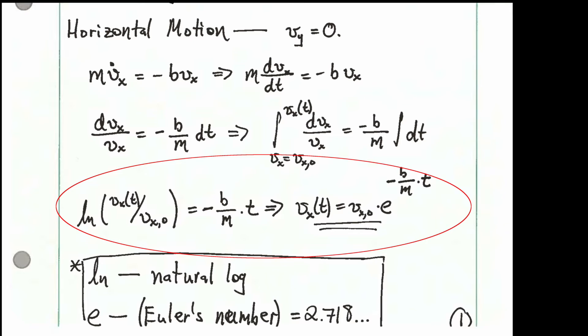And just to remind you, ln, that's the symbol for natural log, and then lowercase e. That's usually the notation for Euler's number, which is a number equal to 2.718 and a lot of other stuff because it's an irrational number.